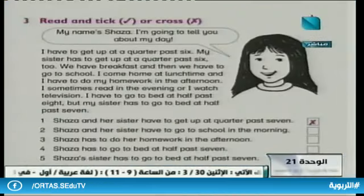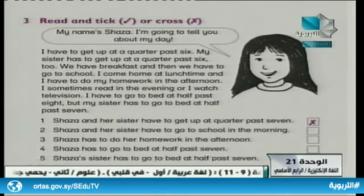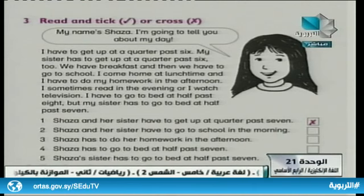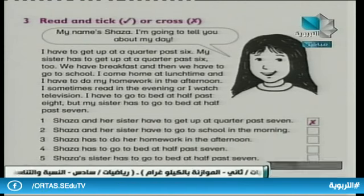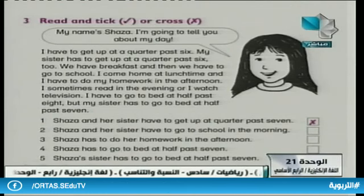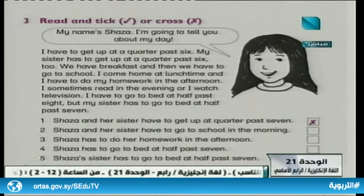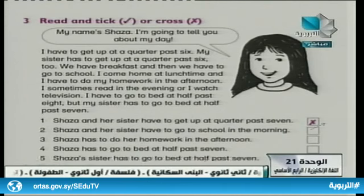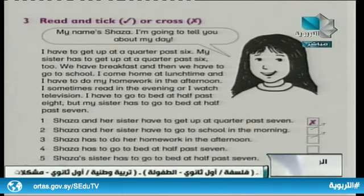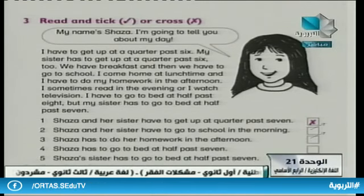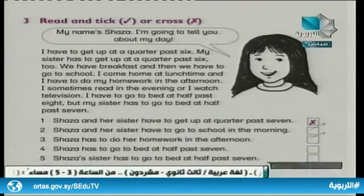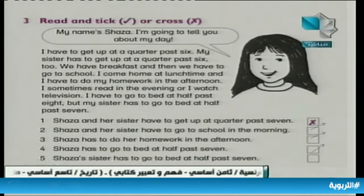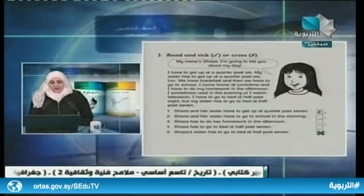Number one: Shaza and her sister have to get up at quarter past seven — false, the paragraph says quarter past six. Number two: Shaza and her sister have to go to school in the morning — true. Number three: Shaza has to do her homework in the afternoon — true. Number four: Shaza has to go to bed at half past seven — false. Her sister has to go to bed at half past seven, not Shaza.